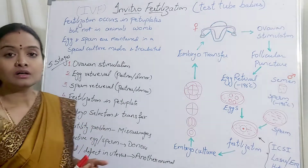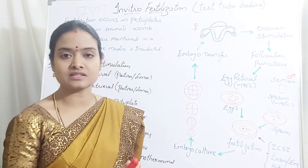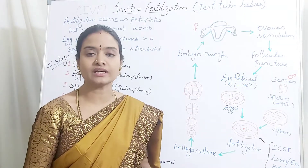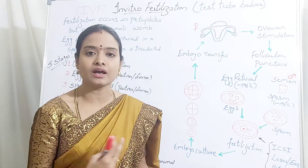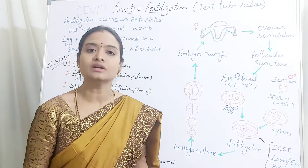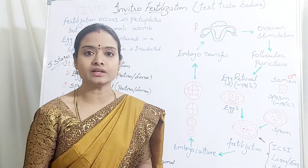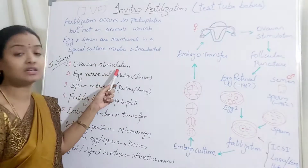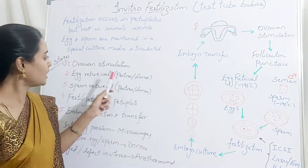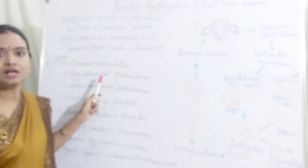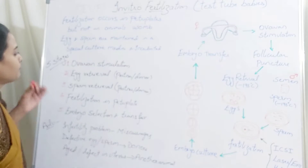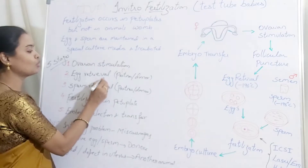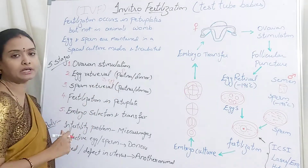Before the IVF technique gets started, the female is given super ovulation injections so that their gonadotropin hormone level will increase and they produce more number of eggs. Two or three eggs are produced due to super ovulation or ovarian stimulation. After this process it is the egg retrieval. The female partner will produce more than three eggs.